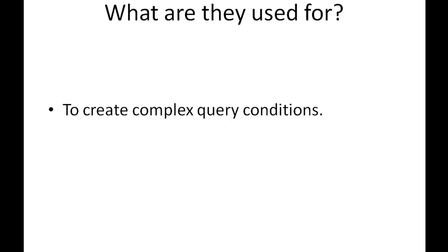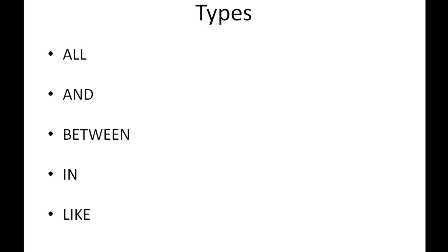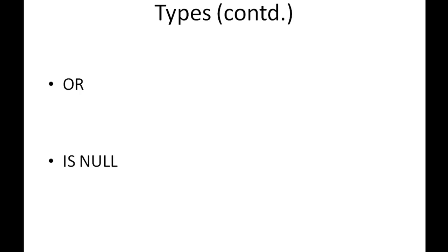We're going to see how logical operators allow us to do all of that in just a moment. First, let's check out the types of logical operators in SQL. On the screen you can see the list: we have AND, BETWEEN, IN, LIKE, OR, and IS NULL. These are some of the logical operators in SQL. We'll be using these most frequently — there would hardly be an occasion where you'd need something like EXISTS.